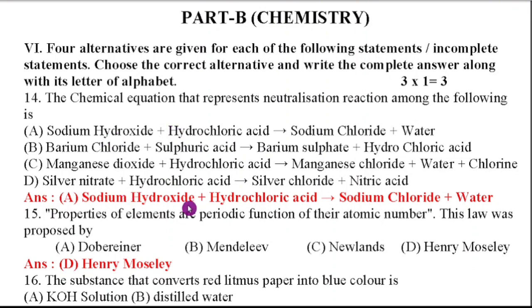Fifteenth question, properties of elements are periodic functions of their atomic number. This law was proposed by Dobereiner, Mendeleev, Newlands and Henry Moseley. So this is the modern periodic law statement. So it is given by Henry Moseley. So the answer is option D, Henry Moseley.